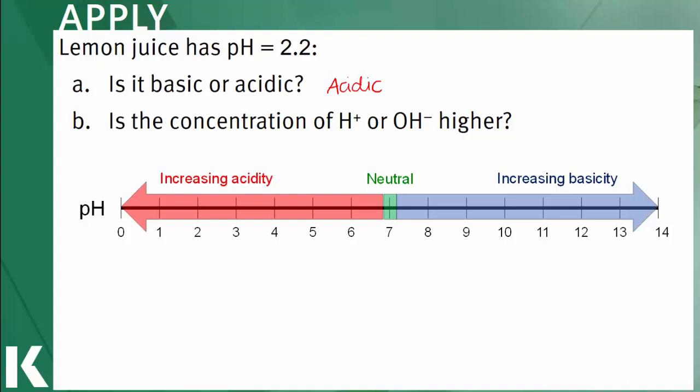In part B, the question asks about the relative amounts of hydrogen ions versus hydroxide ions. When the pH is less than 7, remember we're not balanced anymore and we have more hydrogen ions in solution than hydroxide ions.